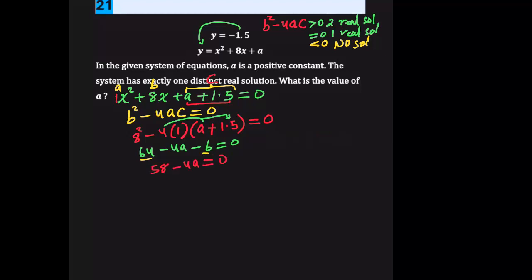We subtract 58 from both sides, so negative 4a equals negative 58. These negatives cancel out, and we have a equals 58 over 4. Simplifying: 58 divided by 2 is 29, and 4 divided by 2 is 2, so a equals 29 over 2. And that's the value of a.